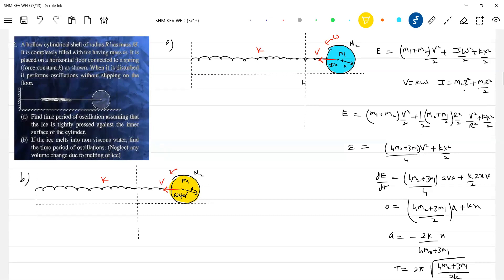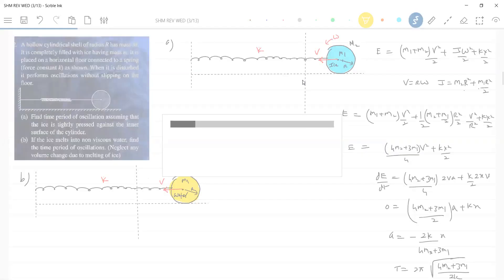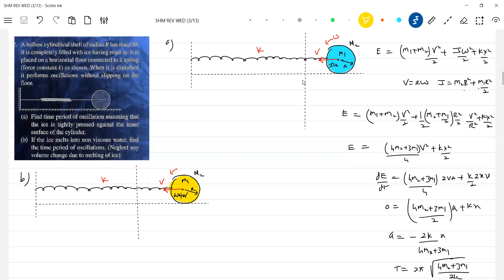What will happen to the role of water here? It's non-viscous, what changes we have to make? Translation only. It will have translation, it will not have rotation kind of motion. Moment of inertia m2 r squared.